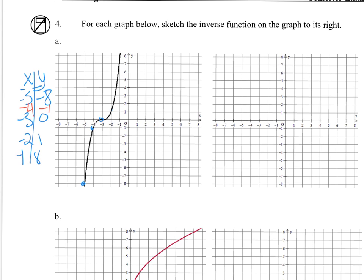So the inverse will have the points (-8, -5), (-1, -4), (0, -3), (1, -2), and (8, -1). And there's the graph of the inverse.